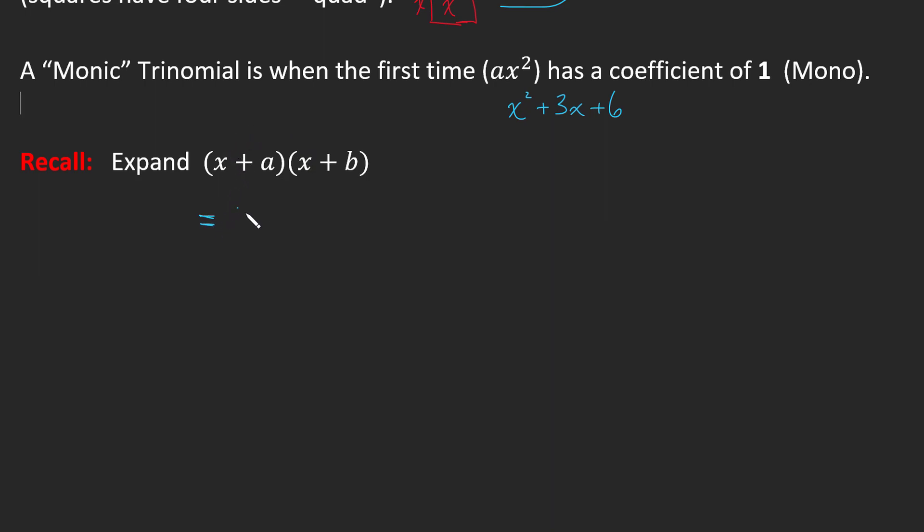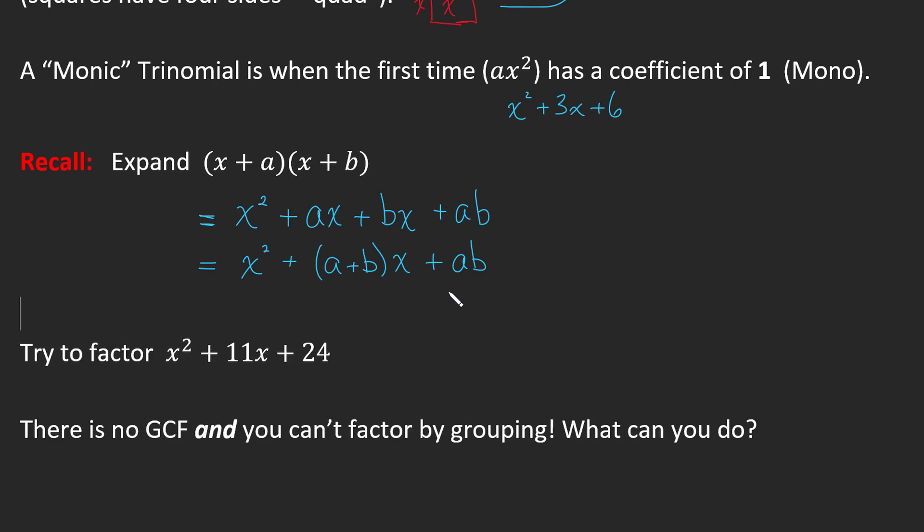So we're just going to remind ourselves x times x is x², x times b, or you might even do a times x first. That's kind of sort of up to you and we would do the x times the b and we would do the a times the b. Okay and so we can if we want to collect these like terms which we would normally do. Now a + b, these aren't numbers. So I'm just going to write a + b. We can definitely combine these like terms. This pattern is really important and we're going to be using this pattern to help us solve things.